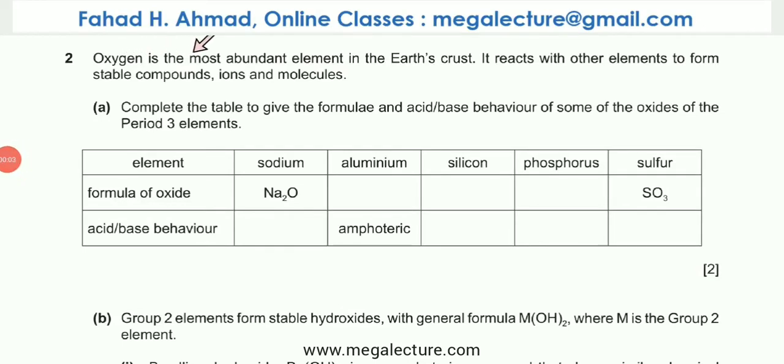The following question reads that oxygen is the most abundant element in the earth's crust. It reacts with other elements to form stable compounds, ions and molecules. You're being asked to complete the table to give the formula and acid-base behavior of some of the oxides of the Period 3 elements. These are the oxides whose formula we need to give and their acid-base behavior.